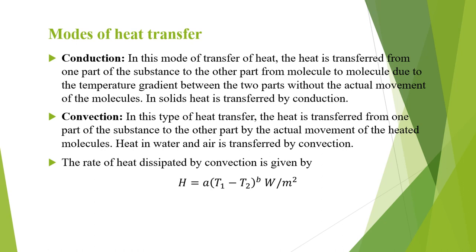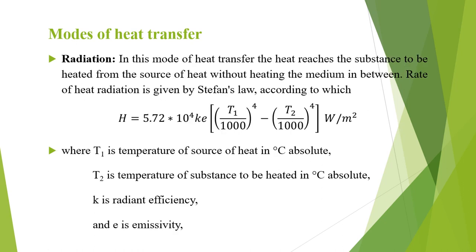For vertical surfaces the value of A is 3.875 and B is 1.25. The next mode of heat transfer is radiation. In this, the heat reaches the substance to be heated from the source of heat without heating the medium in between.